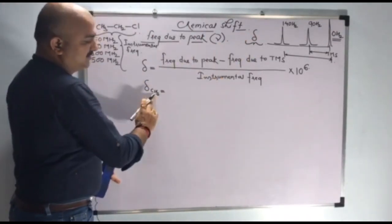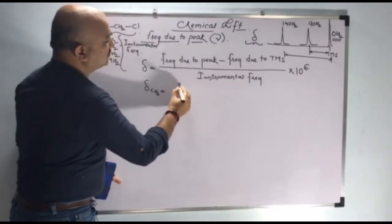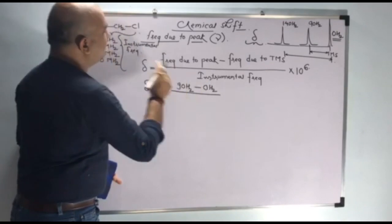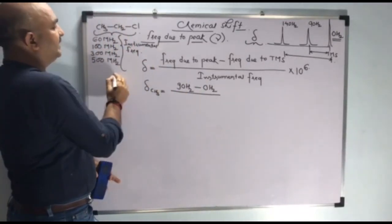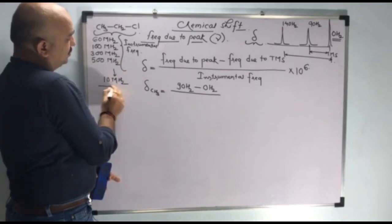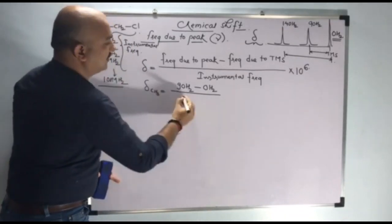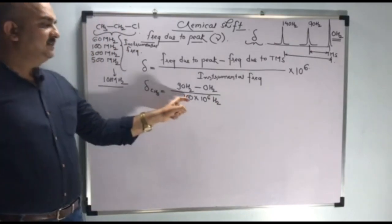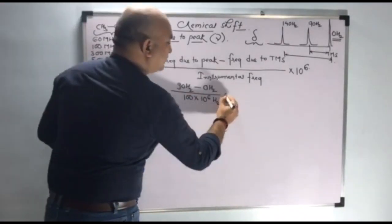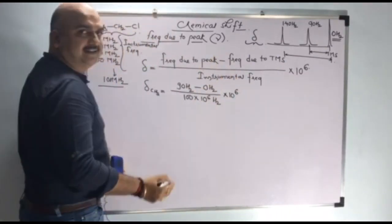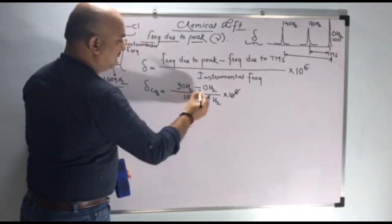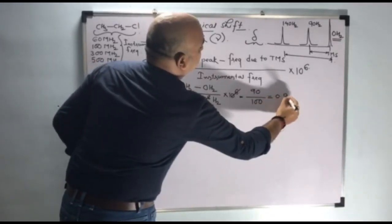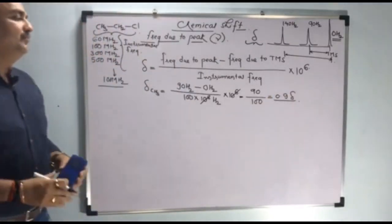We are finding chemical shift of CH3. Frequency due to that peak is 90 hertz. Frequency due to TMS is always 0 hertz. Instrumental frequency — we have taken this spectra on a 100 megahertz instrument. 100 megahertz equals 100 into 10 raised to 6 hertz. So the calculation gives 90 divided by 100, which equals 0.9 delta. This is the chemical shift value for CH3.